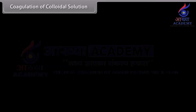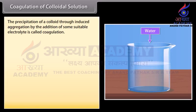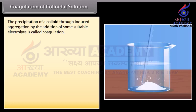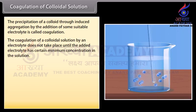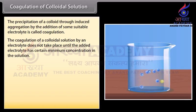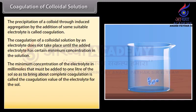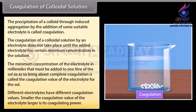Coagulation of colloidal solution. The precipitation of a colloid through induced aggregation by the addition of some suitable electrolyte is called coagulation. Coagulation does not take place until the added electrolyte has a certain minimum concentration. The minimum concentration of electrolyte in millimoles that must be added to one liter of the sol to bring about complete coagulation is called the coagulation value of the electrolyte for the sol. Different electrolytes have different coagulation values; smaller the coagulation value, larger is its coagulating power.